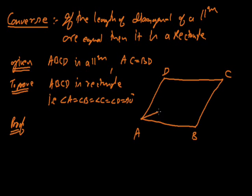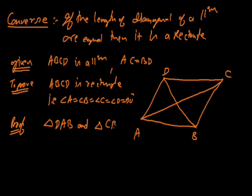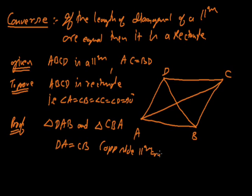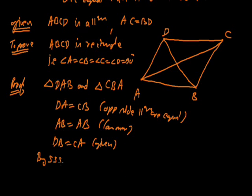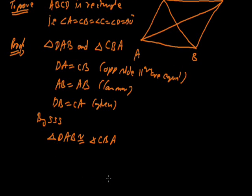We connect AC and BD. We consider triangle DAB and triangle CBA. In the two triangles: DA equals CB — opposite sides of parallelogram are equal; AB equals AB — common; and DB equals CA — given, the diagonals are equal. So by SSS criteria, triangle DAB is congruent to triangle CBA.